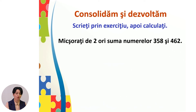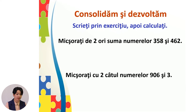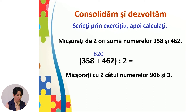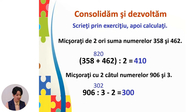Vă propun, pentru a consolida cunoștințele acumulate astăzi, să scrieți propoziția matematică și să calculați: micșorați de două ori suma numerelor 358 și 462; micșorați cu 2 câtul numerelor 906 și 3. Verificăm: suma 358 + 462 = 820, împărțim la 2, obținem câtul 410; câtul numerelor 906 și 3 este 302, micșorăm cu 2 și obținem diferența 300. Sunteți de laudă! Vă urez succes și vă provoc să exersați și alte împărțiri din manual. La revedere!